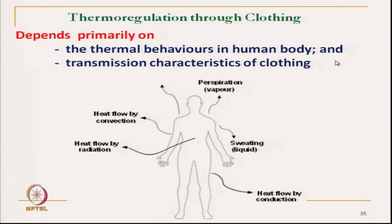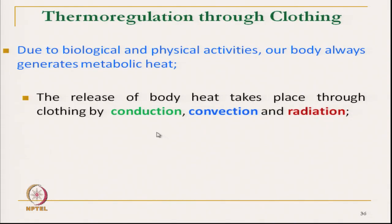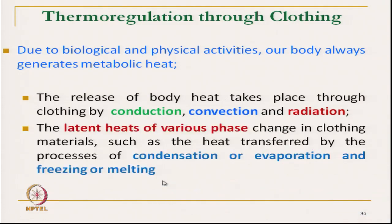The thermal behaviour of the human body and transmission characteristics are shown in this diagram. Heat flows in and out by conduction, convection, and radiation. In terms of dry heat, it is released through clothing by conduction, convection, or radiation. Heat is also released as moisture in liquid or vapour form — as latent heat through condensation, evaporation, freezing, or melting.